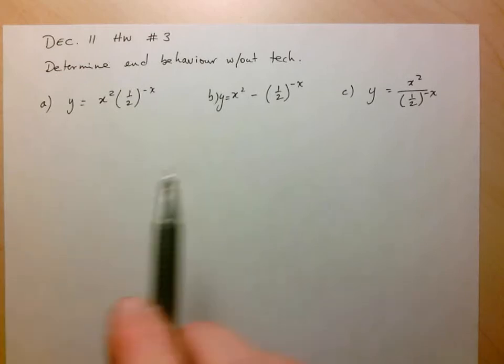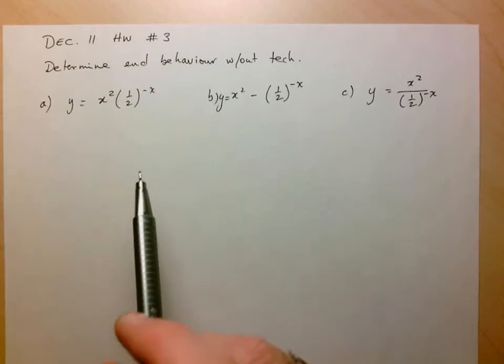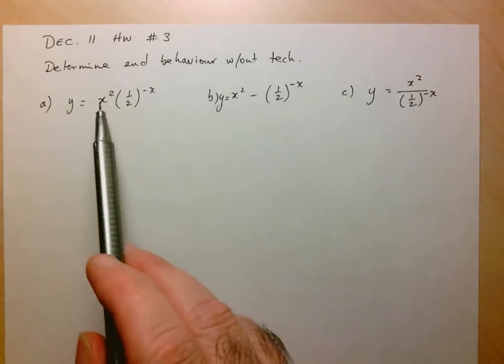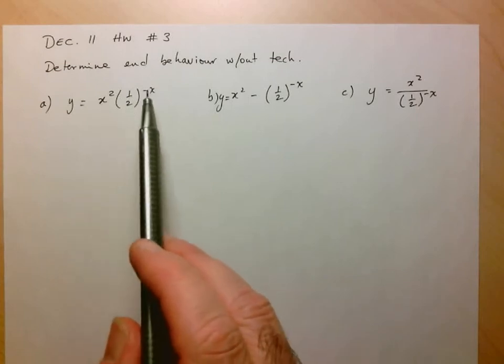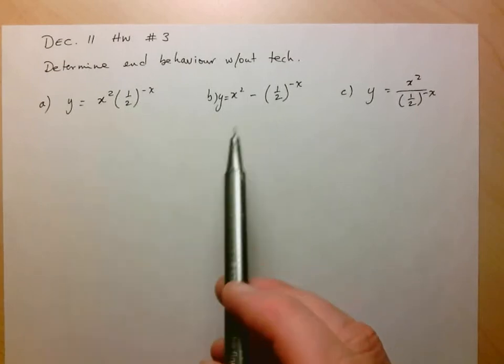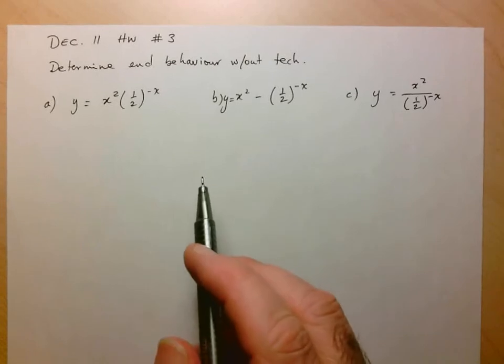Here we notice that we have combinations of the same two functions. I'm working with x squared and one-half to the negative x. Here I'm multiplying, here I'm subtracting, and here I'm dividing.